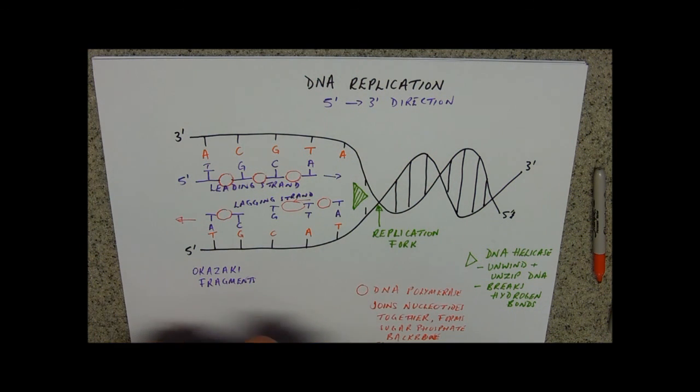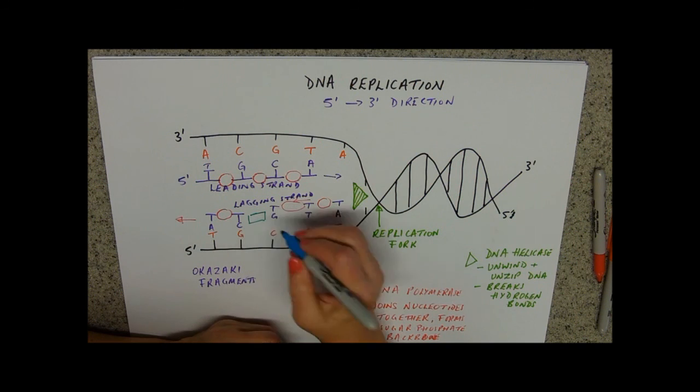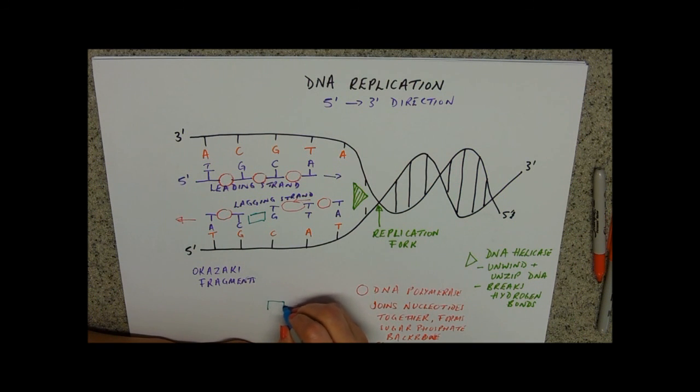The Okazaki fragments then need another enzyme. What colors have I got? Blue. So another enzyme to kind of seal up the breaks. I'll draw this one as a square. And that enzyme is called DNA ligase.